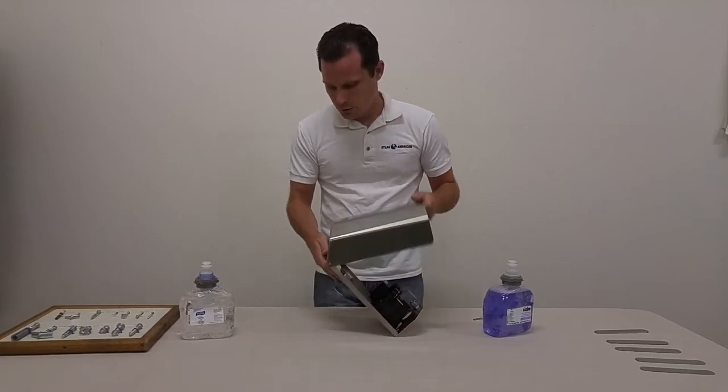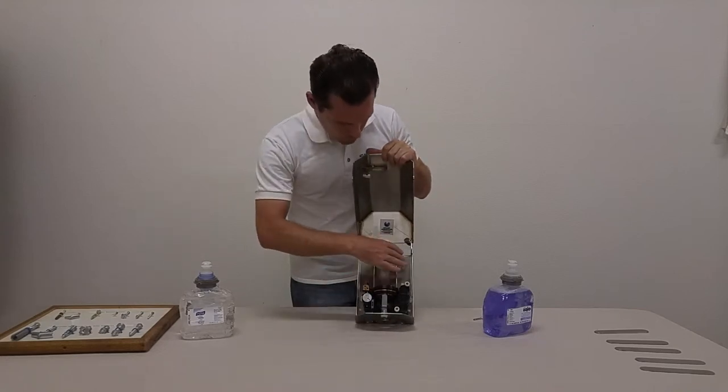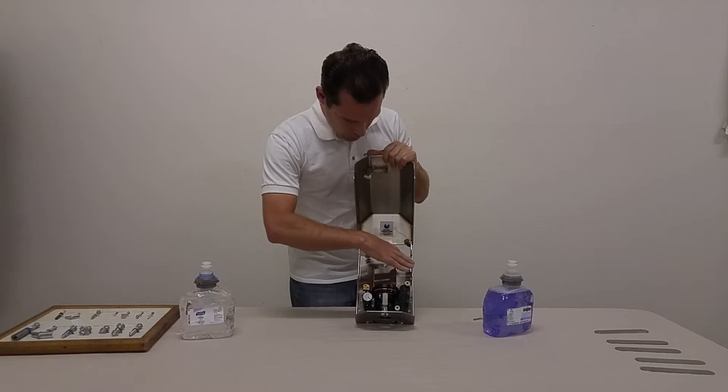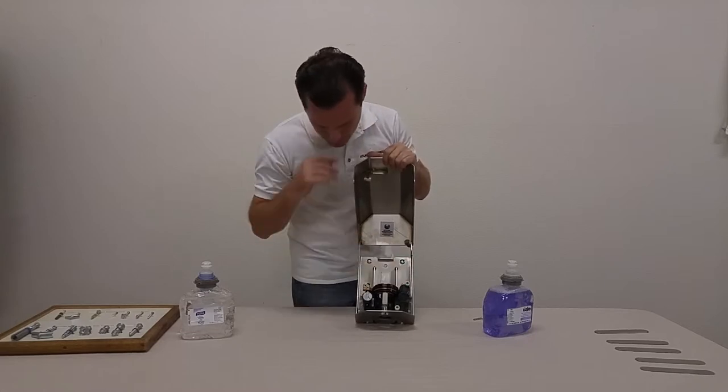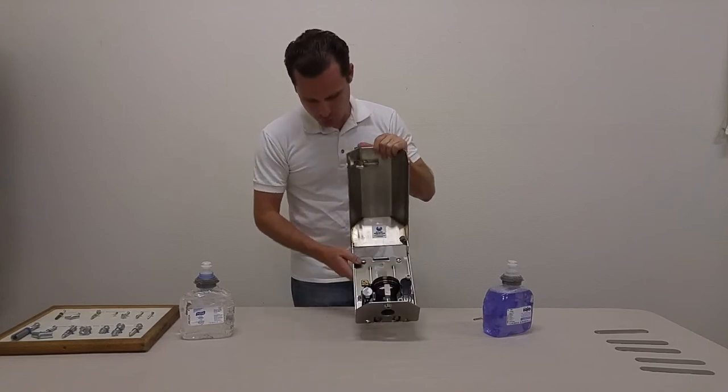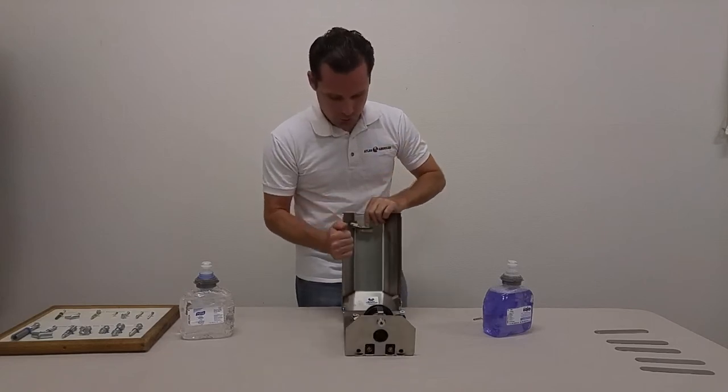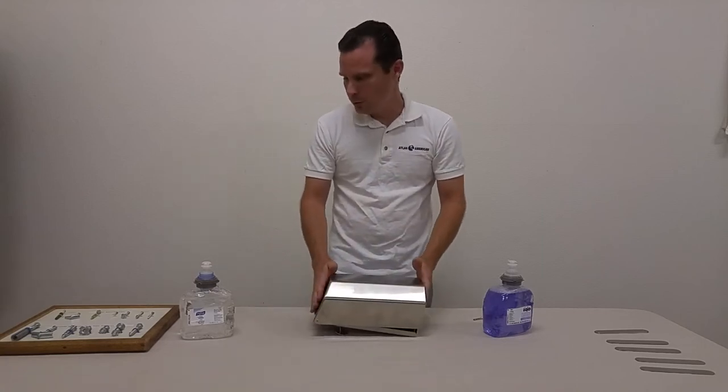One thing I wanted to point out before I actually lock this up. Your mounting hardware access points are actually inside. You've got two bolts here. You have two optional bolts here, and two more bolts down here. It makes it very secure. It's really a solid, solid setup. And when it's locked, there's no access to your mounting hardware.